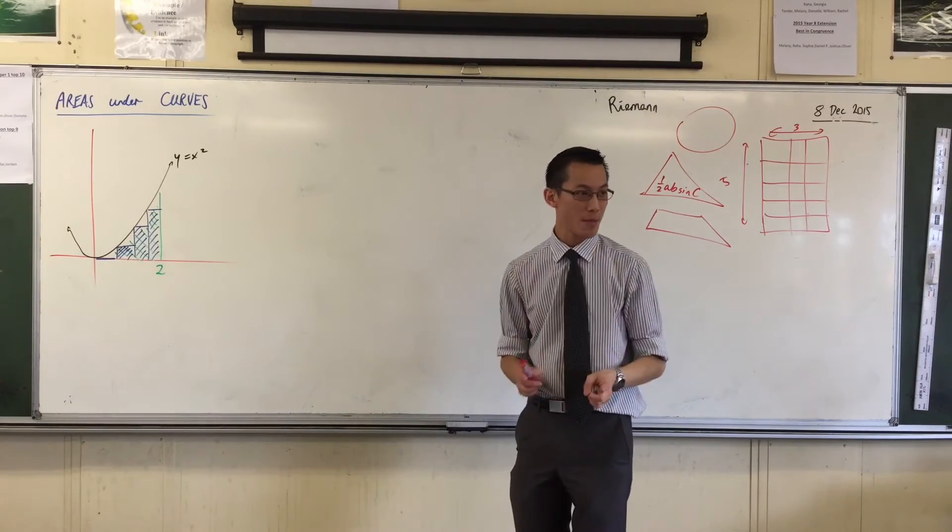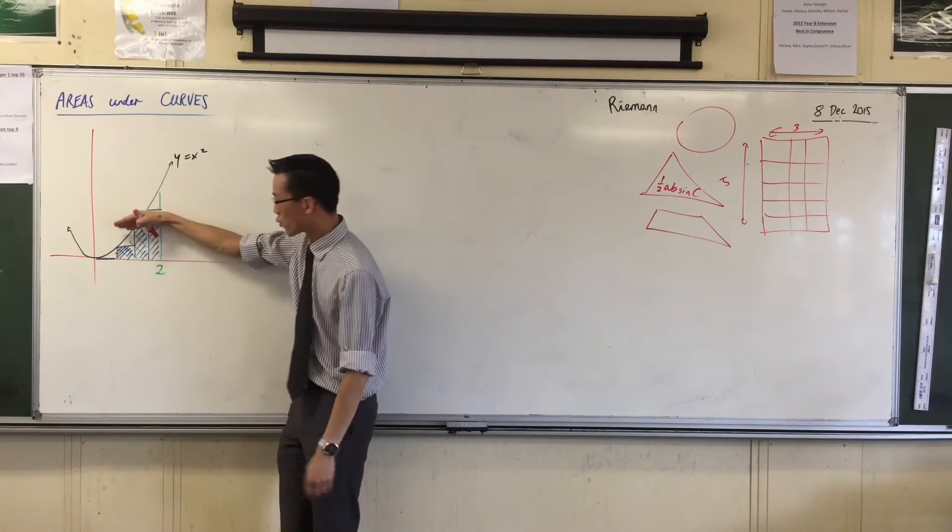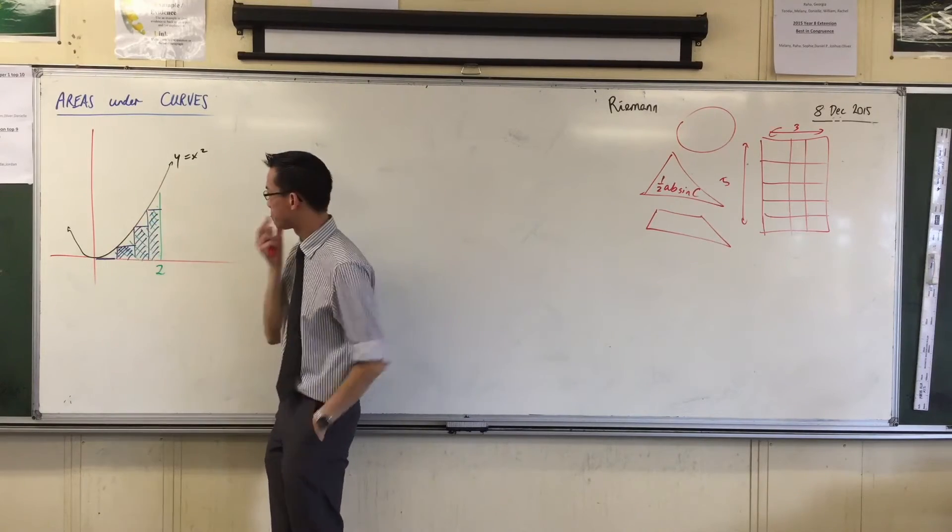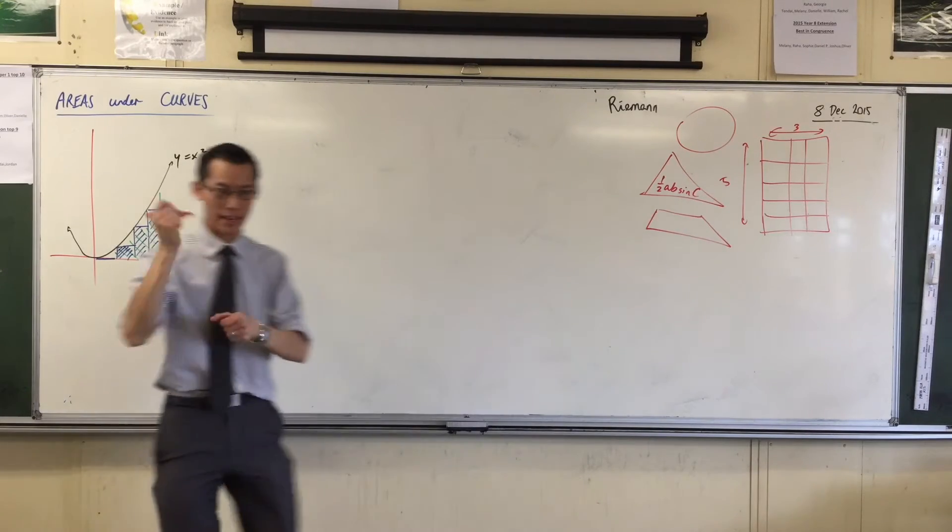But I can be even smarter, and I can say, see these same subdivisions that gave us four? I've got rectangles underneath the curve. I can also put some rectangles in above the curve, like this.